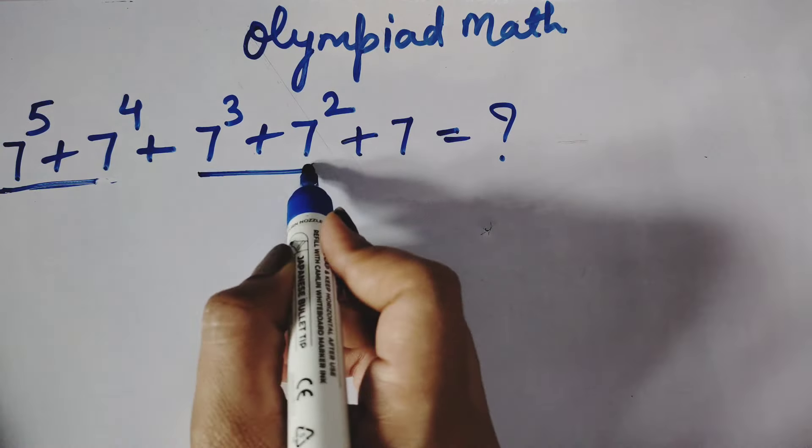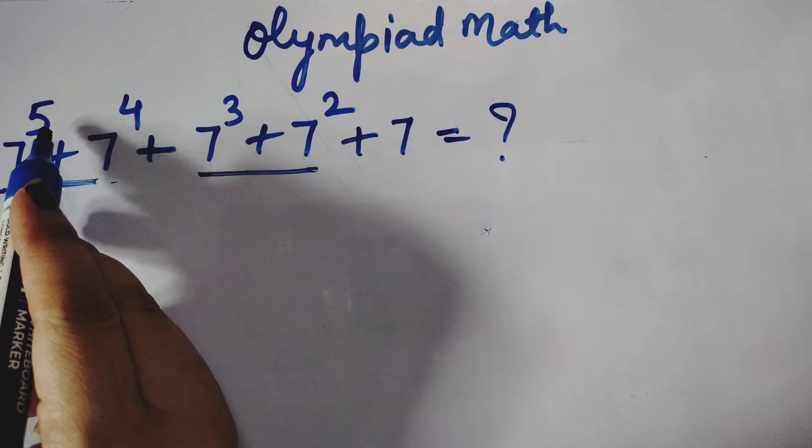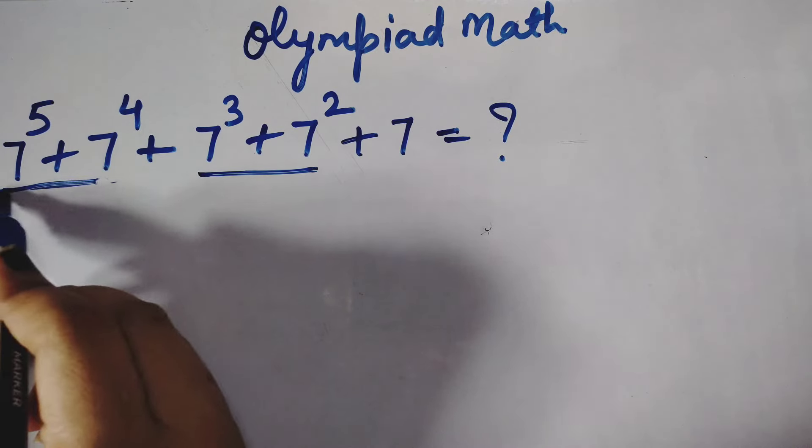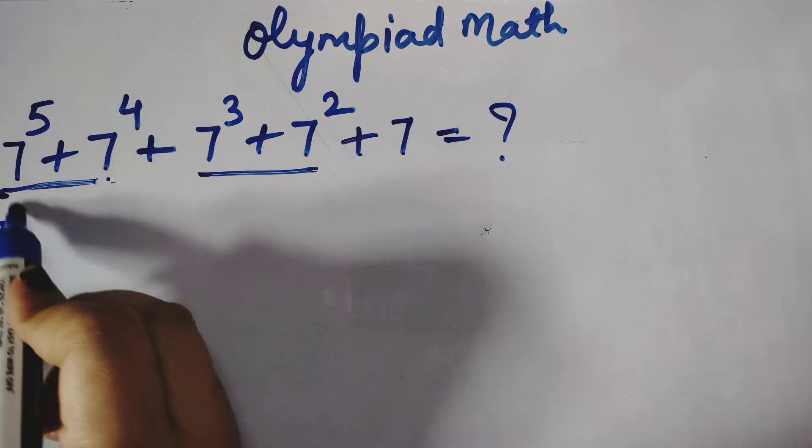You can see here 7 raised to the power 5 plus 7 raised to the power 4. We can make a pair of the first two terms, then the second, third and fourth terms, and the last term is a single term we will leave alone.